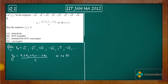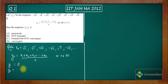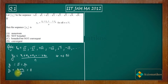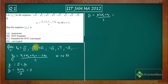Let's compute some terms. y1 = x1/1 = √1. y2 = (x1 + x2)/2; since x1 = √1 and x2 = −√1, they cancel, giving y2 = 0. For y3 = (x1 + x2 + x3)/3: x1 and x2 cancel, leaving only x3/3. Since x3 = √2, we get y3 = √2/3.